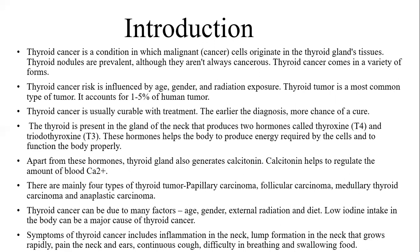There are four types of thyroid cancer. The first is papillary carcinoma. These types of thyroid cancer grow slowly and occur from follicular cells. These types of cancers can be cured easily with the help of medication.